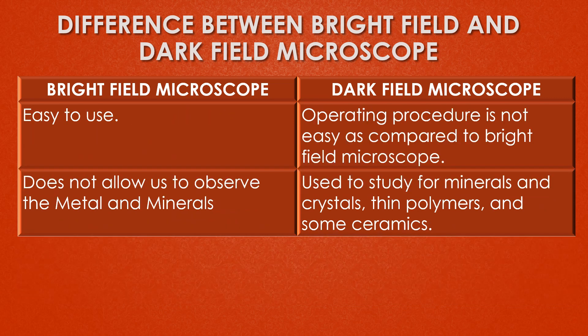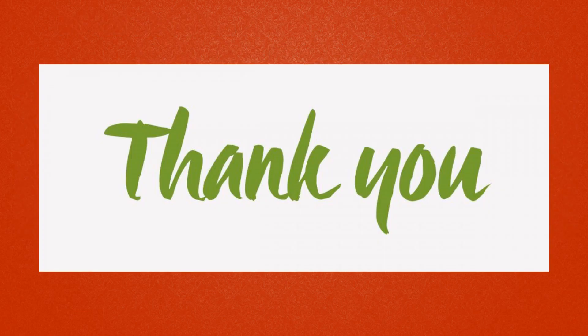The bright field microscope is easy to use, but the dark field microscope operating procedure is not as easy. The bright field microscope does not allow us to observe metals and minerals, but the dark field microscope is used to study minerals and crystals, thin polymers, and some ceramics. That's all about the bright field microscope and the dark field microscope. Thank you for your support.